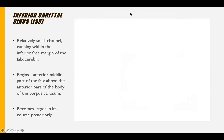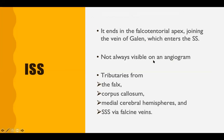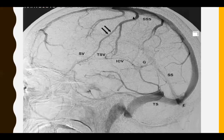The inferior sagittal sinus is a relatively small channel running within the inferior margin of the falx cerebri. It begins just above the corpus callosum, becomes larger as it goes posteriorly, and ends at the falcotentorial apex, where it joins the vein of Galen to enter the straight sinus. It is not always visible on an angiogram. Its tributaries come from the falx, corpus callosum, and medial hemisphere surface. It also connects with the superior sagittal sinus via falcine veins.